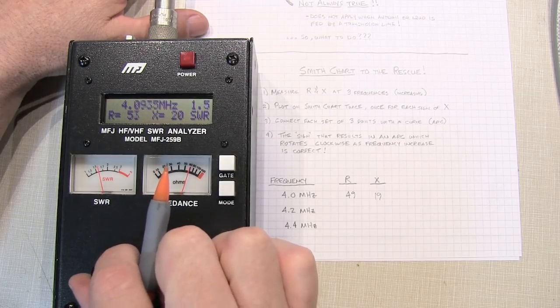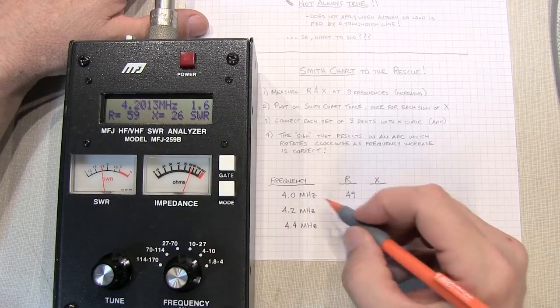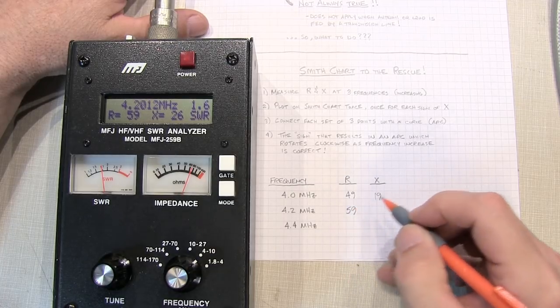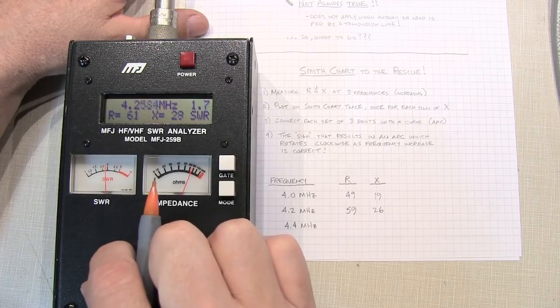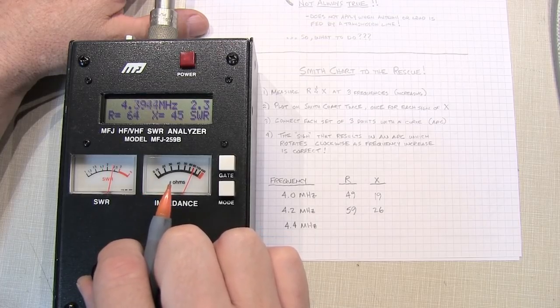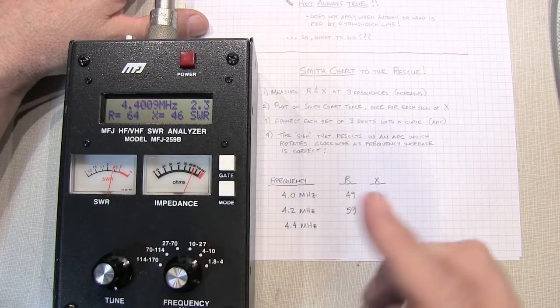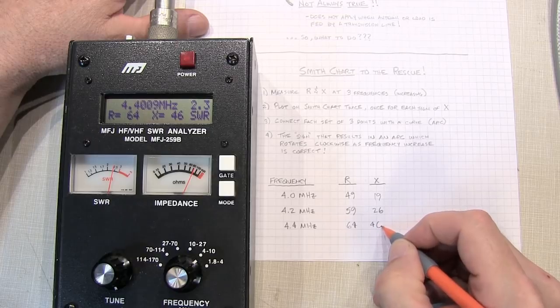Let's adjust up to 4.2 megahertz. We'll record 59 ohms and 26 ohms reactive. And then if we go to 4.4 megahertz, we'll record 64 ohms and 46 ohms reactive.